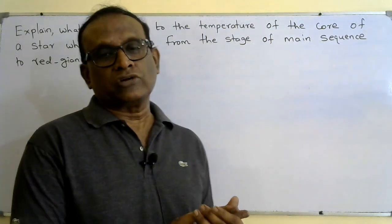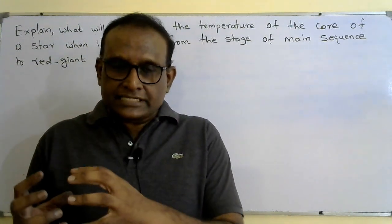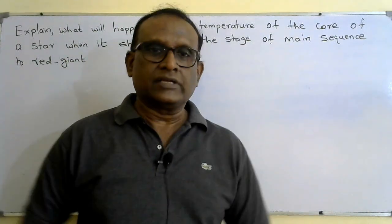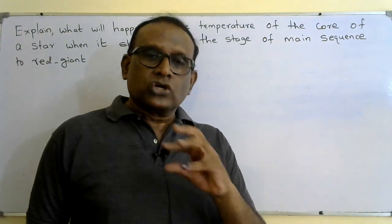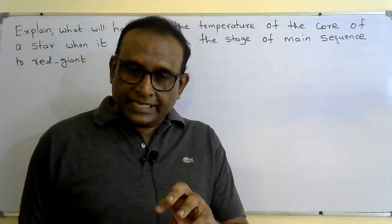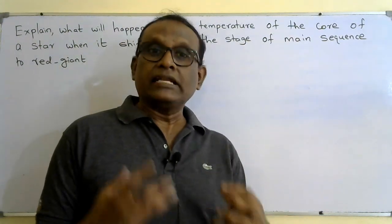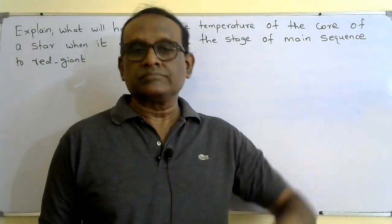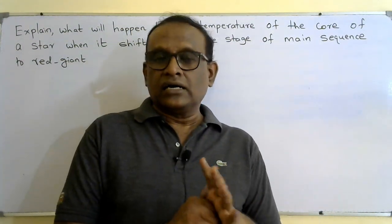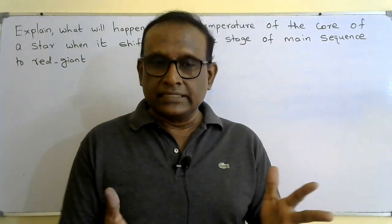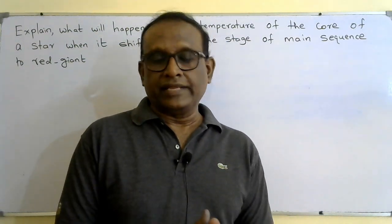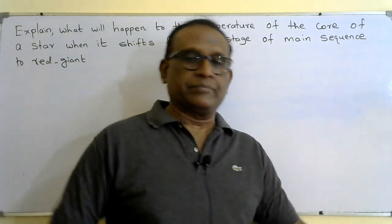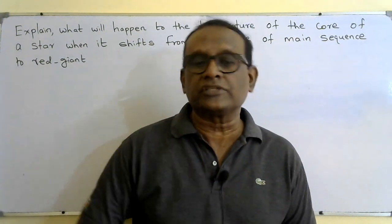What will happen to the temperature of the core of a star when it shifts from the main sequence stage — in the HR diagram, the Hertzsprung-Russell diagram, shown along the diagonal — to the red giant stage? Normally, using Wien's law, we can receive radiation, split it, and measure the temperature — but that is the surface temperature. This question is about the temperature of the core.